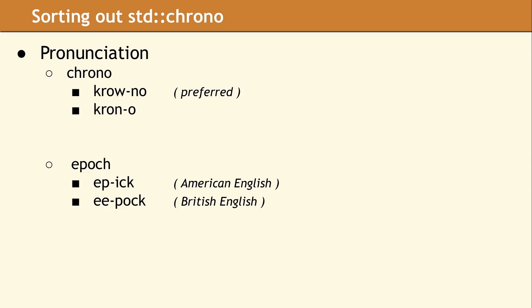Looking at the second term, people who use American English will say epoch, with the stress on the first syllable. This will sound very similar to the English word epic, which means a legendary story. If you happen to be in the UK, the accepted way to pronounce this word changes to epoch. Both are correct, and the way you choose to say it will depend largely on where you learned to speak English.